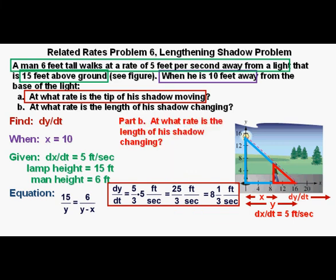Now, let's go on to Part B. At what rate is the length of his shadow changing? The answer is going to be the rate of the tip of the shadow moving that we got in doing Part A of this problem minus the rate the man is walking.